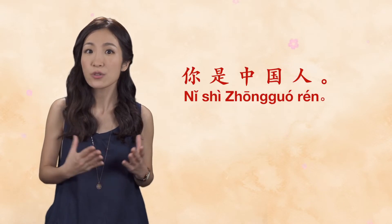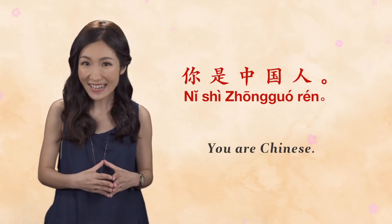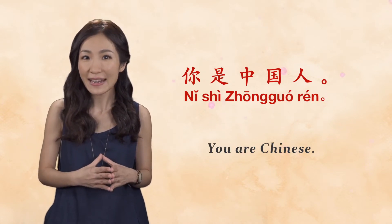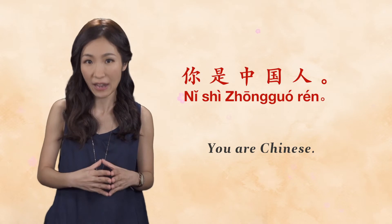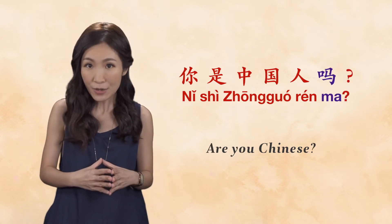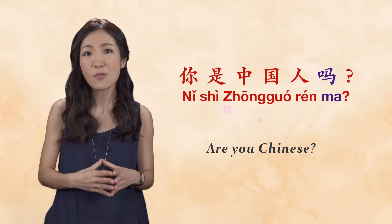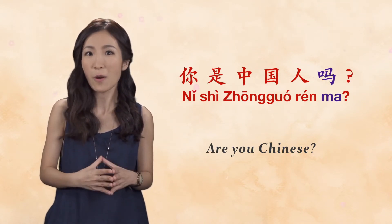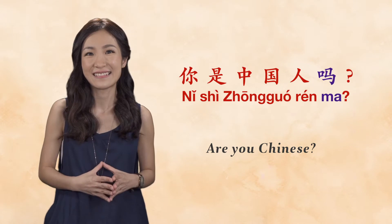So, for example, we begin with the statement 你是中国人 — 'you are Chinese' — and form a question by adding the standard question marker character 'ma' to the end. Our question thus becomes 你是中国人吗? The Chinese way of making questions is actually simpler than the English way, wouldn't you say?